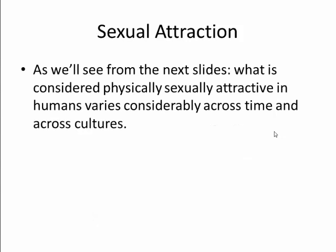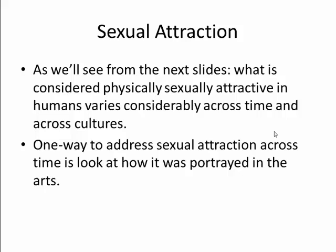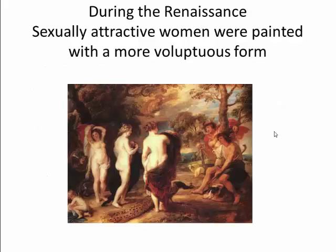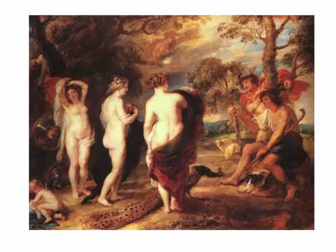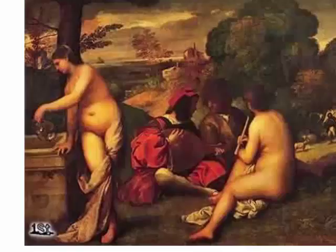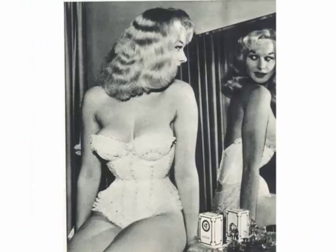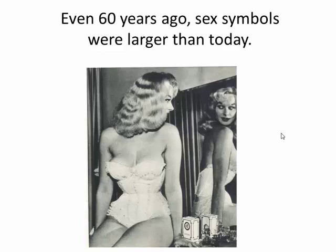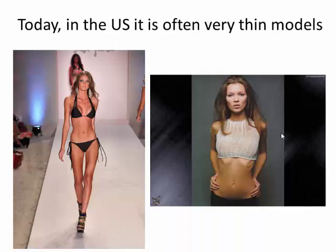Sexual attraction is very subjective. It can be different between cultures and between time periods. One way to address sexual attraction across time is to look at art, because people have been painting for a long time and they paint attractive things. If you look at the Renaissance, sexually attractive women were painted with a more voluptuous form, a larger form. Even maybe 60 or 70 years ago, sex symbols were more voluptuous, a little bit larger than they are today.